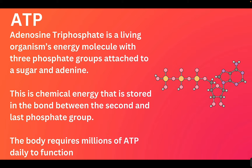The chemical we use is called ATP. ATP stands for adenosine triphosphate, which is shown in the image here. There are three phosphate groups — those yellow circles — attached to a sugar and an adenine. Chemical energy is stored in the bonds between the atoms of a molecule. The energy that our bodies use from ATP is found in the bond between the second and last phosphate group, seen here.